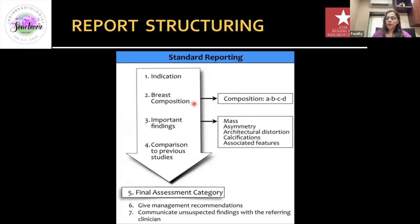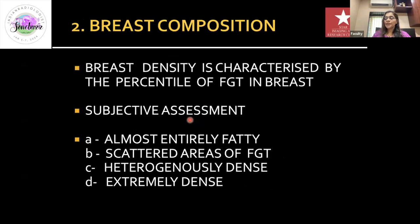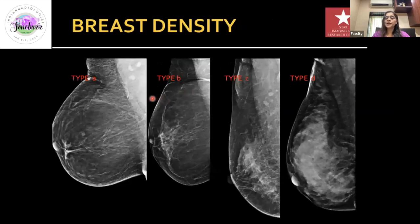The first point in the report is the indication — whether the patient has come for routine screening or a diagnostic evaluation due to a breast-related problem such as a lump or discharge. The first important finding to mention is breast density: a subjective assessment of the percentage of fibroglandular tissue in the breast. It ranges from a purely fatty breast (Type A) to scattered fibroglandular (Type B), heterogeneously dense (Type C), and extremely dense (Type D). In Type C and D, small cancers may be missed due to breast density.